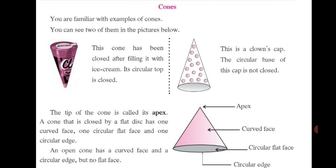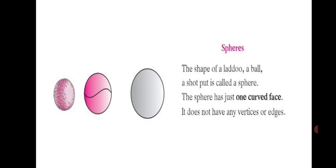Let's learn the last shape, which is sphere. The shape of a laddu, a ball, a shot put is called a sphere. The sphere has just one curved face. It does not have any vertices or edges — just one curved face.